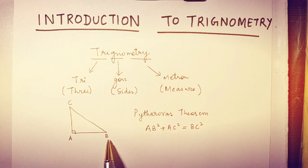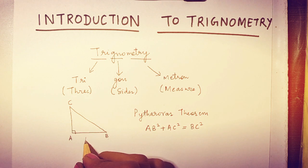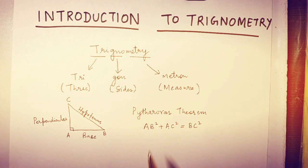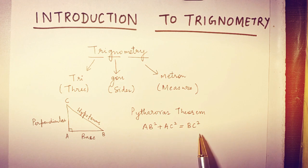And in this triangle, AB is known as base, AC is your perpendicular, and BC is your hypotenuse. And we also know that in right triangles, Pythagoras theorem is also applicable. And what does that say? That the sum of square of base and perpendicular is equal to the square of hypotenuse. That is AB² + AC² = BC².